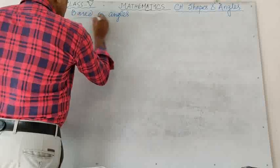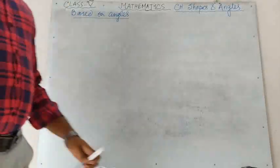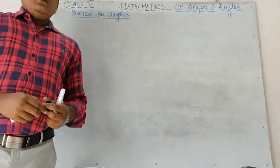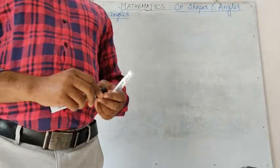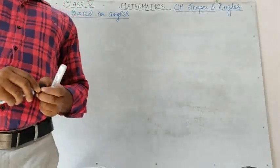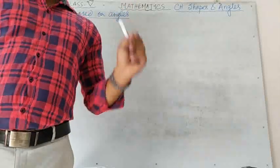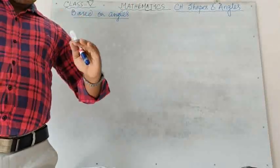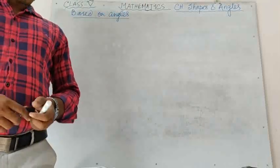Based on angles, there are different kinds of angles we have already learned: acute angle, right angle, obtuse angle, reflex angle, complete angle, and so on. An acute angle is one whose measure is greater than 0 degree and less than 90 degree — that is called an acute angle.